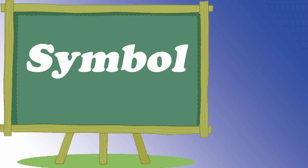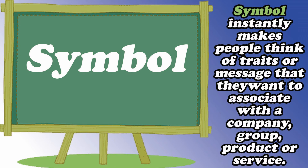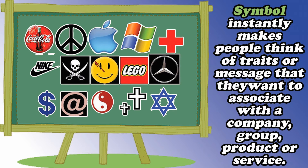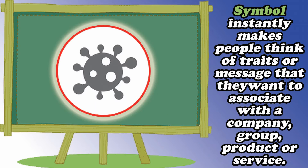Another visual element is what we call symbol. Symbol instantly makes people think of traits or a message that they want to associate with a company, group, product, or service. In Filipino, ito ang tinatawag nating mga simbolo — kapag nakita natin, alam na natin anong company or anong restaurant, anong bagay ang dala ng simbolong ito. These are examples of symbols. This symbol here is what we call the symbol of coronavirus-19, which is very popular nowadays.